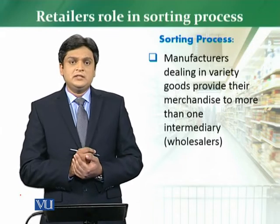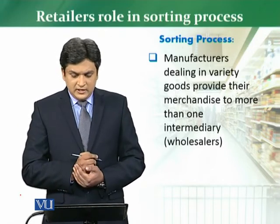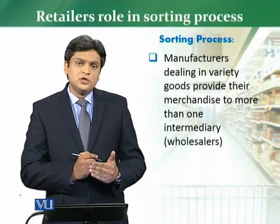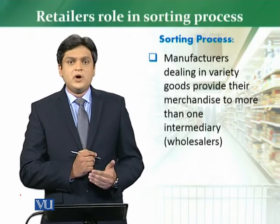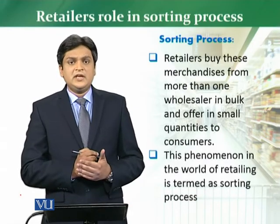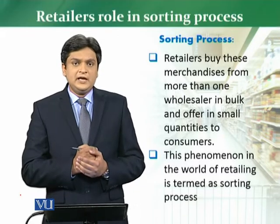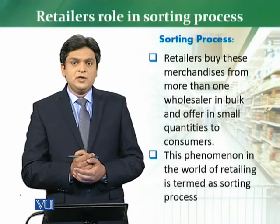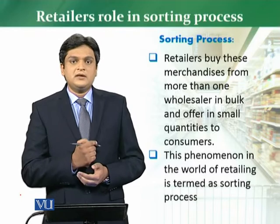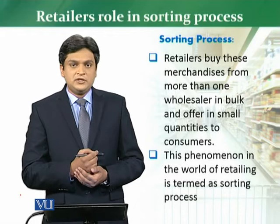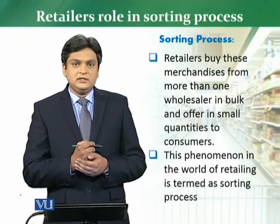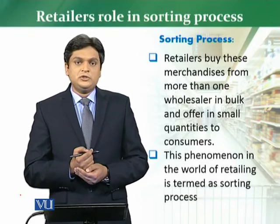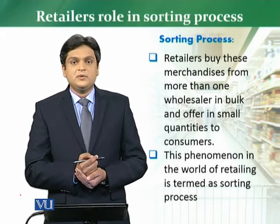Now we need to understand what the sorting process is. A manufacturer normally deals in a variety of goods and sells these goods to more than one intermediary — normally more than one wholesaler. Retailers then buy from those wholesalers and sell to the end consumer. So retailers buy from multiple wholesalers, and wholesalers buy from multiple manufacturers. There are multiple wholesalers, multiple manufacturers, and they all contact the retailer, who then sells to different customers. This whole phenomenon of products reaching the end consumer through this channel is called the sorting process in the world of retailing.